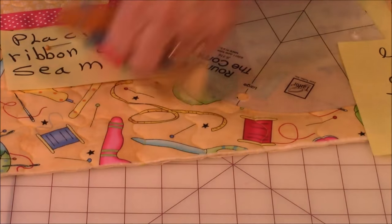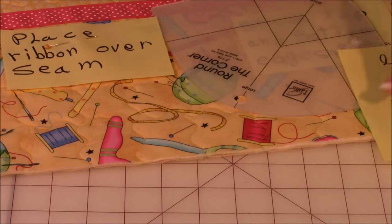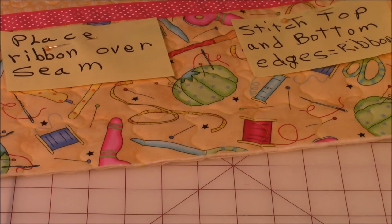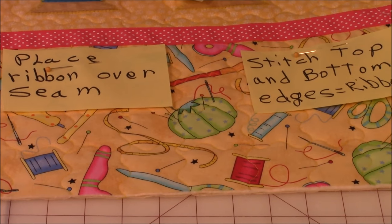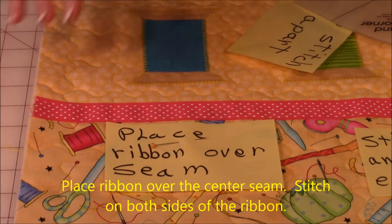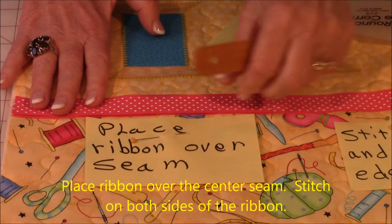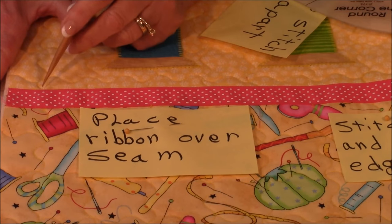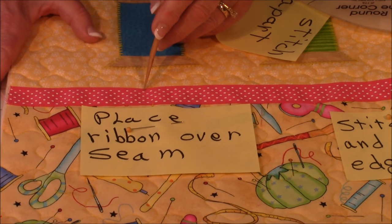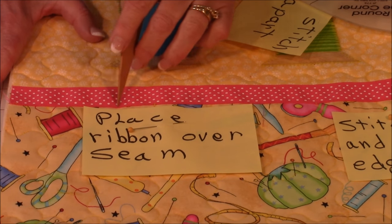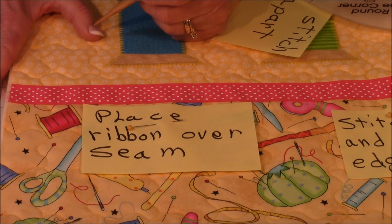Then take your ribbon. And place it over the center seam here. Place it there. Then stitch along the upper edge all the way across. And then the lower edge all the way across. Good. Now we've got one more step to do on this front piece.